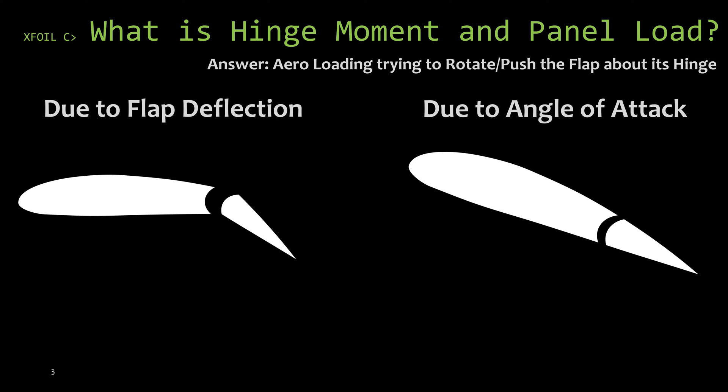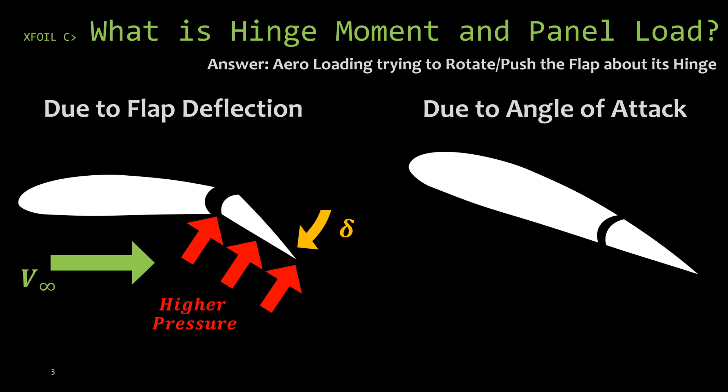The first reason would be flap deflection. Here on the left, we have an airfoil and we've deflected the control surface down a positive delta degrees. Since the aircraft is flying, we have a free stream velocity of airflow going left to right. That airflow is going to cause a higher pressure on the lower surface and a lower pressure on the upper surface.